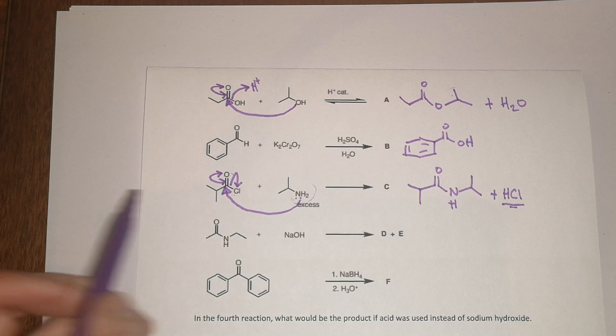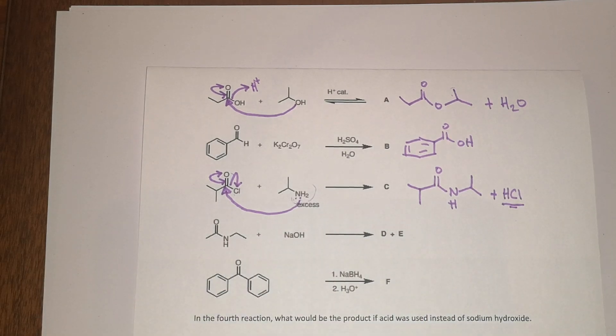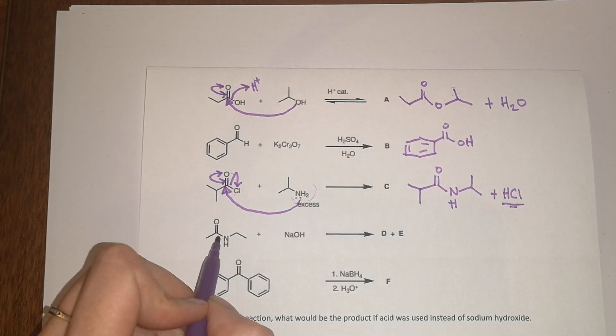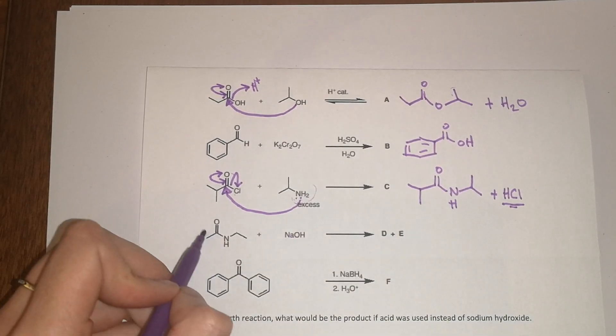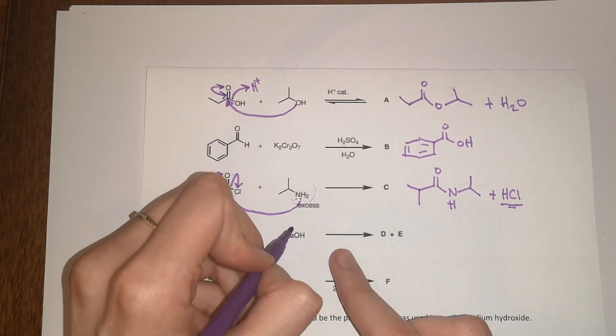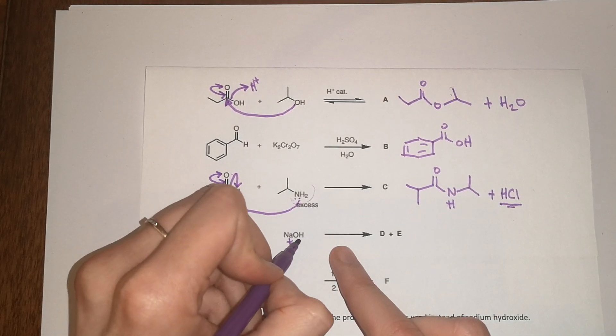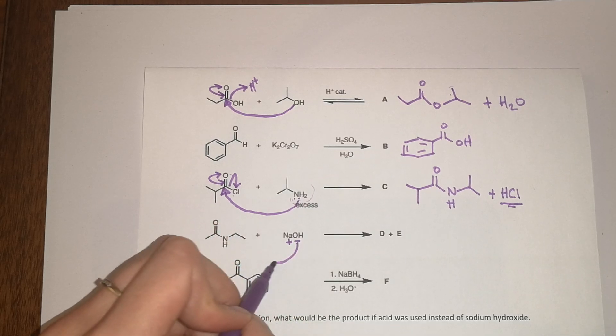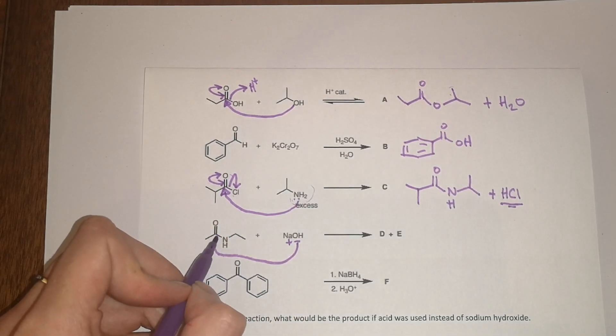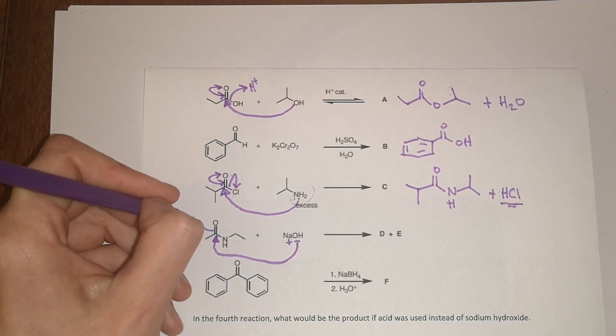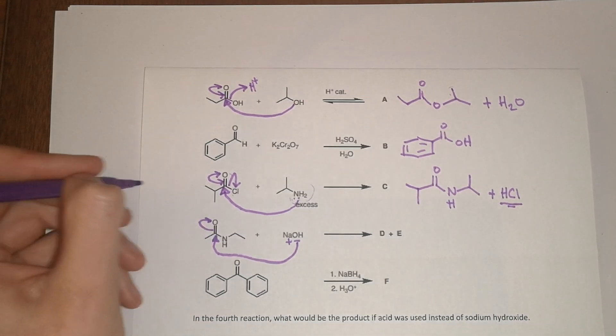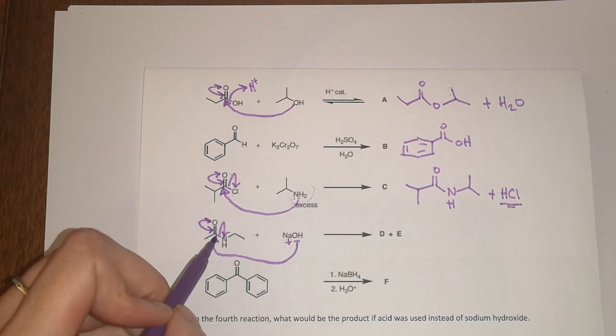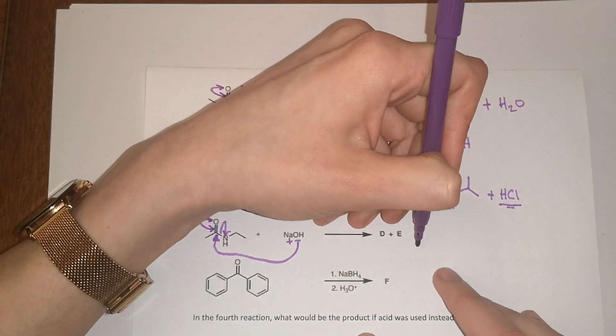The next one is the opposite type of reaction - this is base-mediated hydrolysis of an amide. What you've got here is Na+ and OH-. The negatively charged oxygen will come in and attack your carbonyl, then you'll form your tetrahedral intermediate that will collapse back down and kick out your amine.